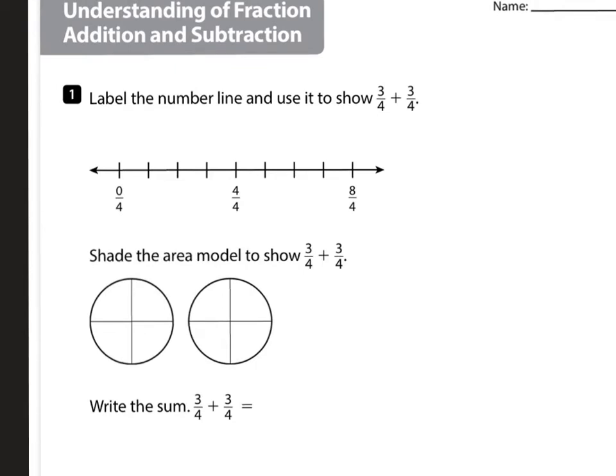Alright, so we start out at 0 fourths. We have 1 fourth, 2 fourths, 3 fourths, 4 fourths, which is really one whole. Anytime you have the same numerator and same denominator, it's always equal to one whole. 5 fourths, 6 fourths, and 7 fourths.